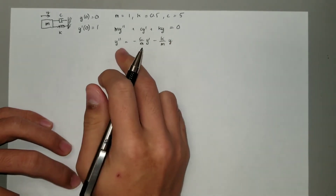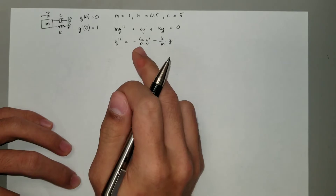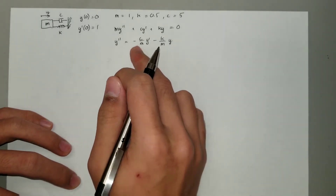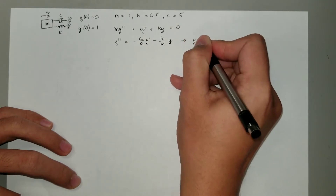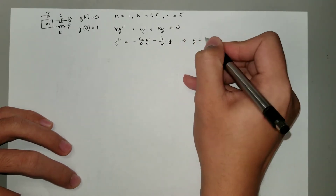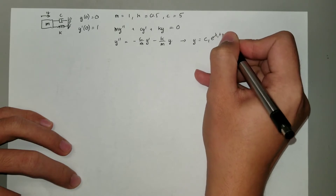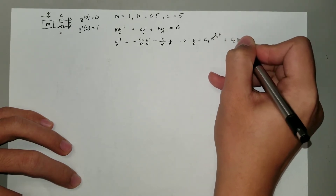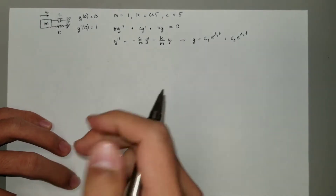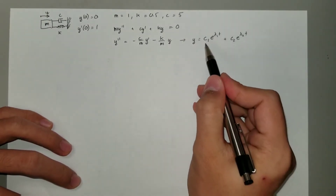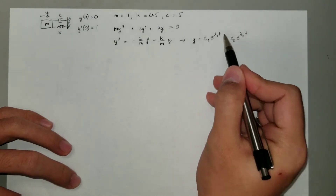This is a second order differential equation and it has a general solution of y equals c1 e to the lambda1 t plus c2 e to the lambda2 t. What we have to find are the constants c1, c2, and the eigenvalues lambda1 and lambda2.